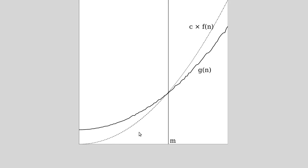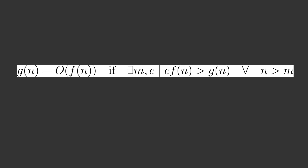There's this multiplier, we don't know what it is. There's no labels on these axes. But beyond this point here, which is labeled m, c times f of n is always greater than g of n. That's what this math basically states.